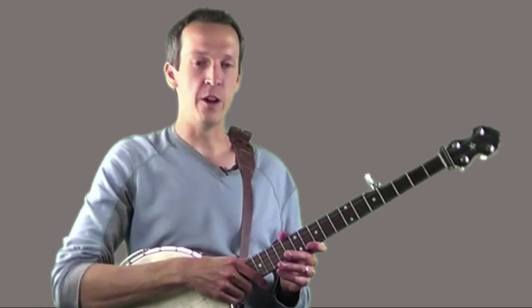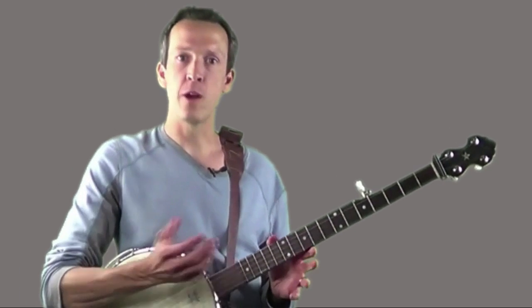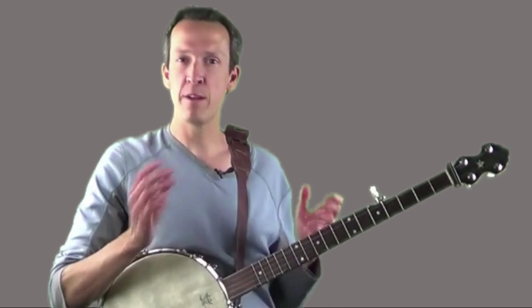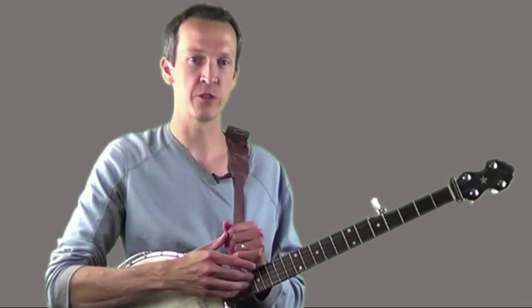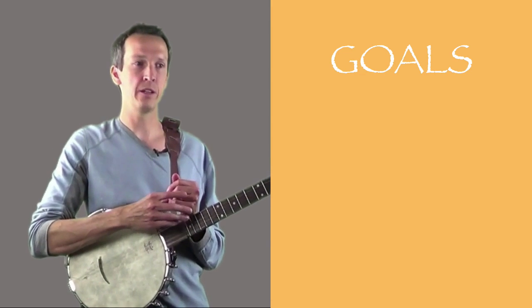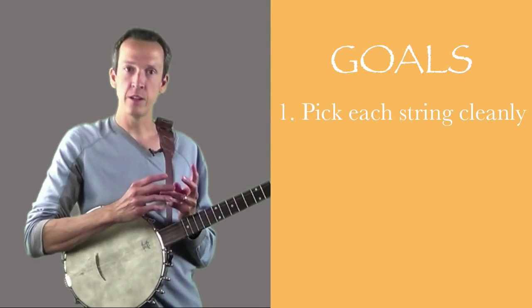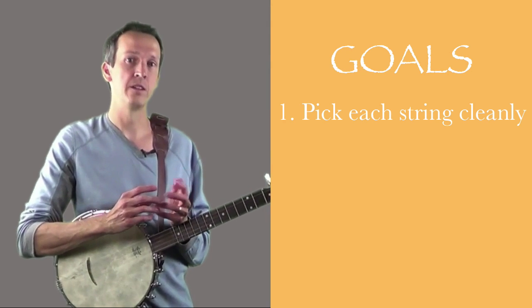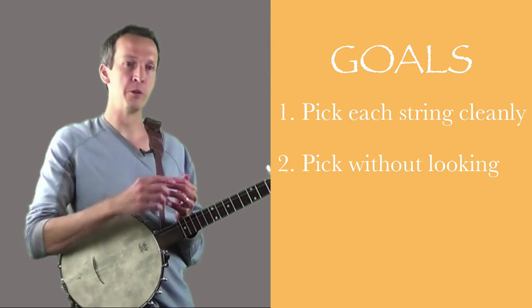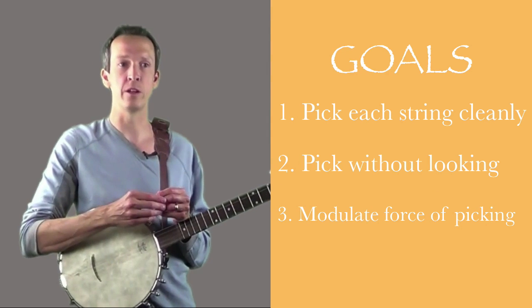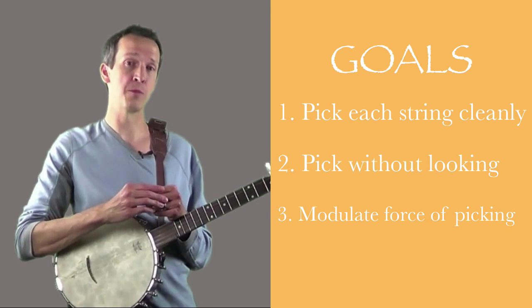So in today's video, we're going to work on striking the individual strings with our picking finger. And we have three main goals here to accomplish when learning this particular skill. First is we want to be able to pick each string cleanly. Second, we want to be able to do so without looking at our picking hand. And third, we want to be able to modulate the amount of force we use when we strike the string, which will allow us to vary the volume of our playing.